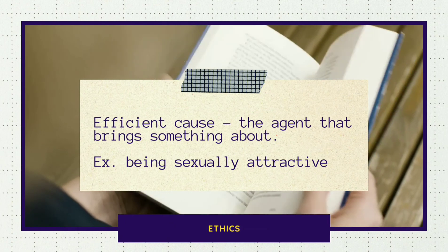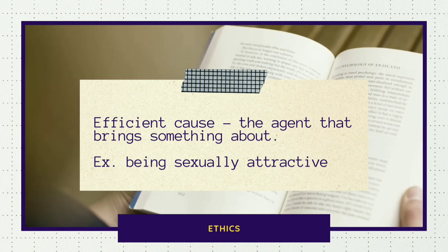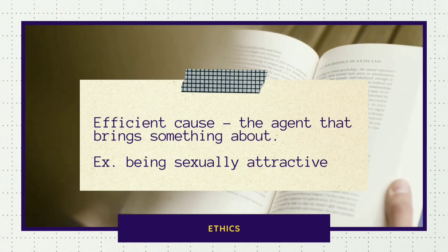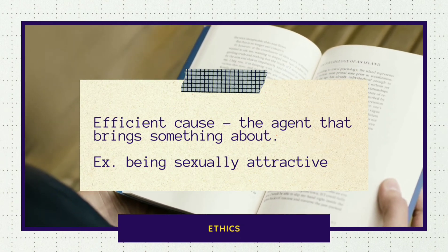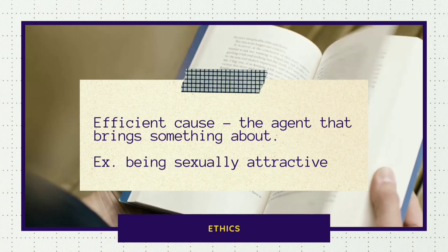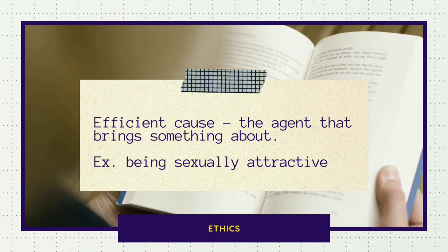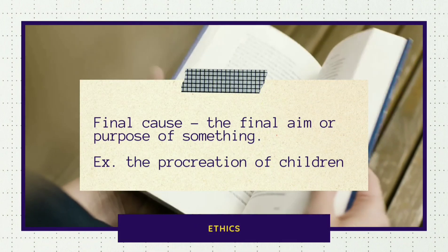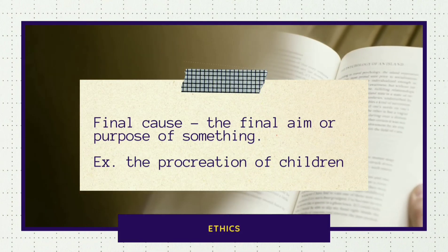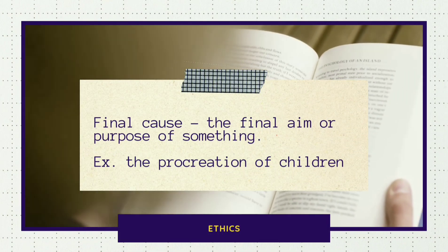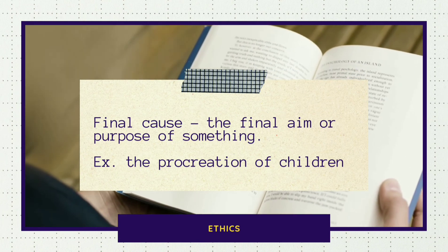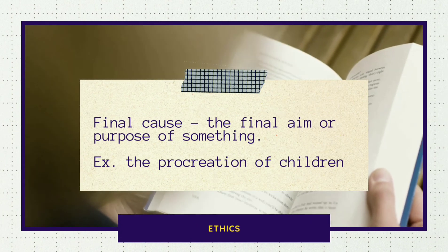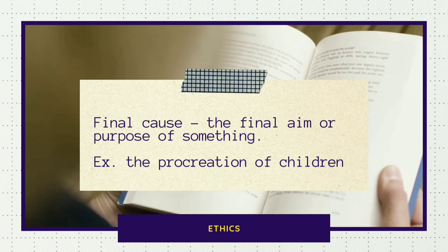Let us define efficient cause and what does it mean. Efficient cause means the agent that brings something about. A good example for this is being sexually attractive. Next, what does it mean by final cause? Final cause means the final aim or the purpose of something. A very good example for this is the procreation of children.